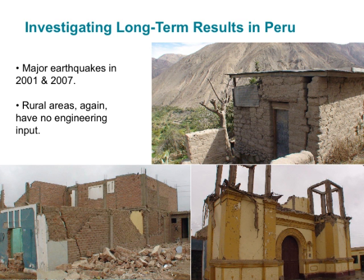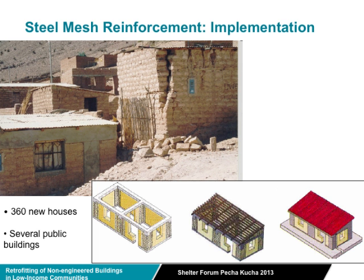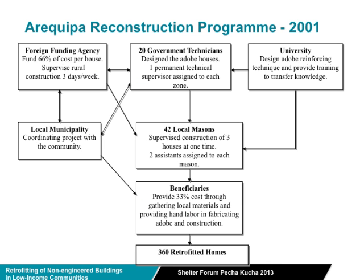Rather than wait ten years, we went to Peru to look at previous examples of similar retrofitting programs that had happened eight years previously. The technique there is an external steel mesh applied vertically and horizontally around a structure, with a ring beam, then mortared over to protect the reinforcement. This technique worked very well in the 2001 and 2007 earthquakes, to the extent that the government decided to construct several hundred new adobe homes using that technique.